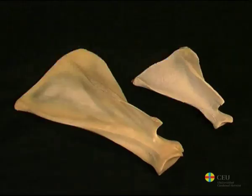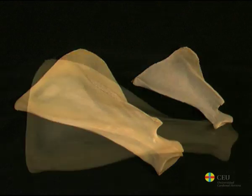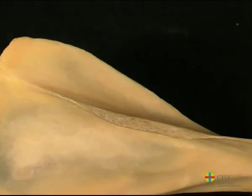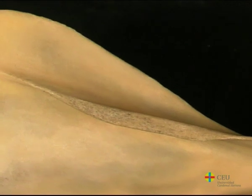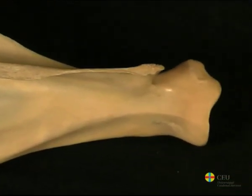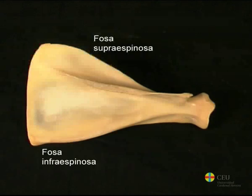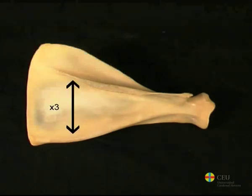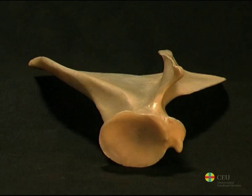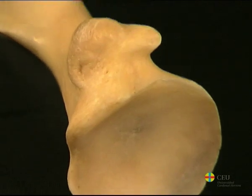The scapula of ruminants has an even more defined triangular shape than that of horses. It is wider in its dorsal part and narrower in its ventral end. The spine of the scapula of ruminants is proportionally more prominent and sinuous, and in its distal part it ends in a well-defined prominence, the acromion. The difference in size between the supraspinous and infraspinous fossa is also greater than in equines — the infraspinous fossa is approximately three times wider. The shape of the glenoid cavity is more rounded and does not have a notch, and the tubers and apophyses are in general less developed than in horses.